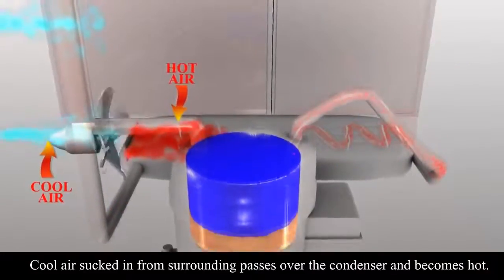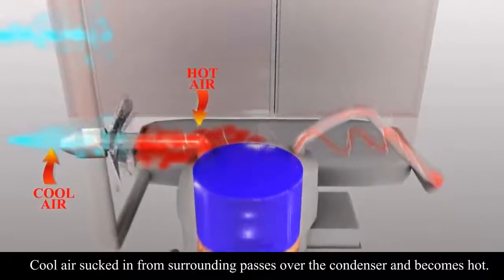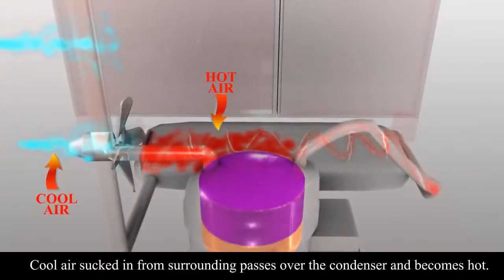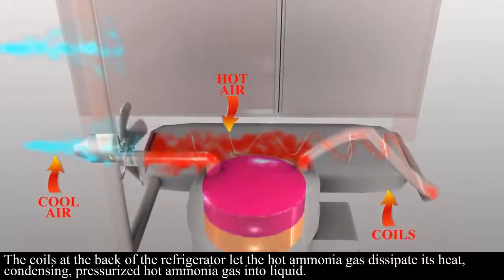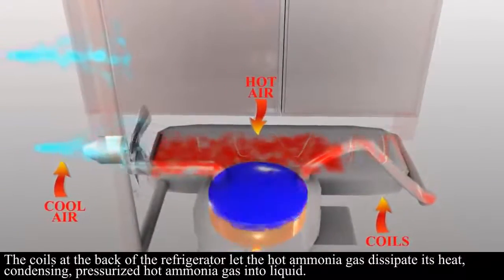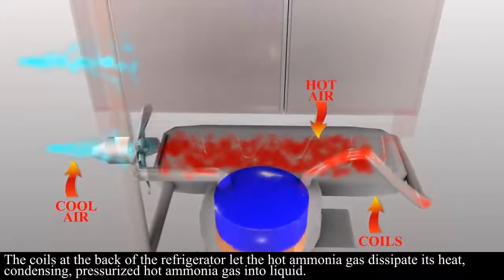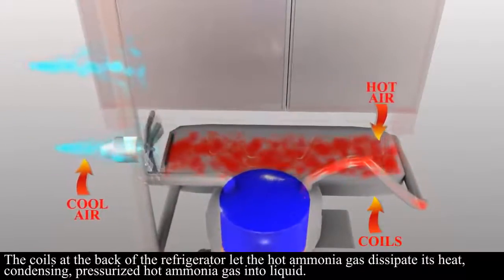Cool air sucked in from the surroundings passes over the condenser and becomes hot. The coils at the back of the refrigerator let the hot ammonia gas dissipate its heat, condensing pressurized hot ammonia gas into liquid.